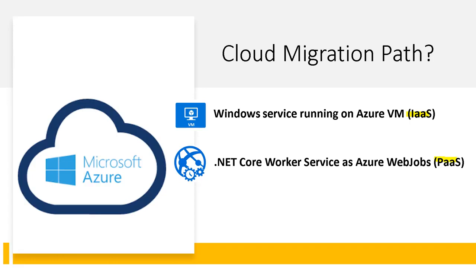For that reason, you would have to convert to a console application first, then upgrade to Web Jobs. That is why, if you have a requirement to build a Windows service as fresh development, consider Worker Services over Windows Services — so that when you migrate to the cloud, you can migrate simply without any conversions or extra Azure infrastructure setup.